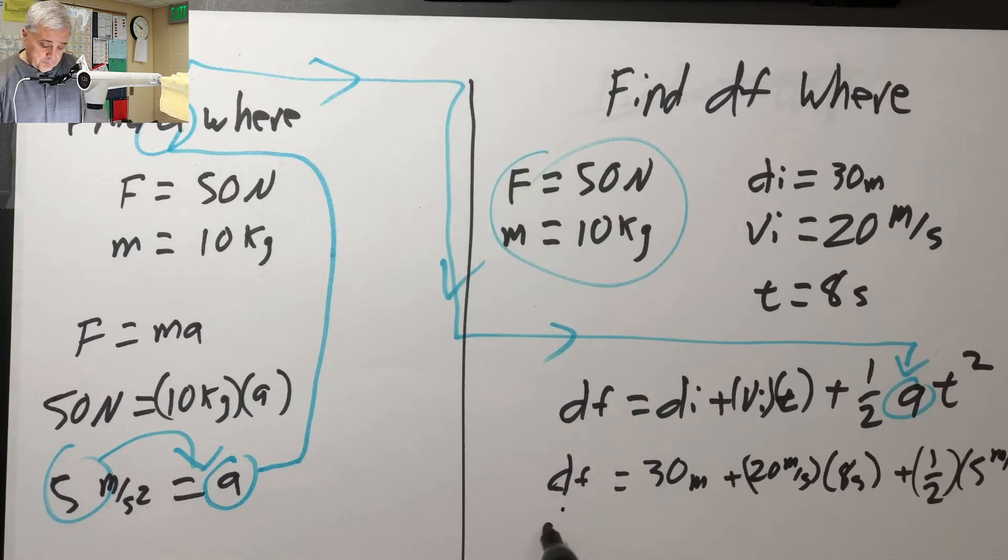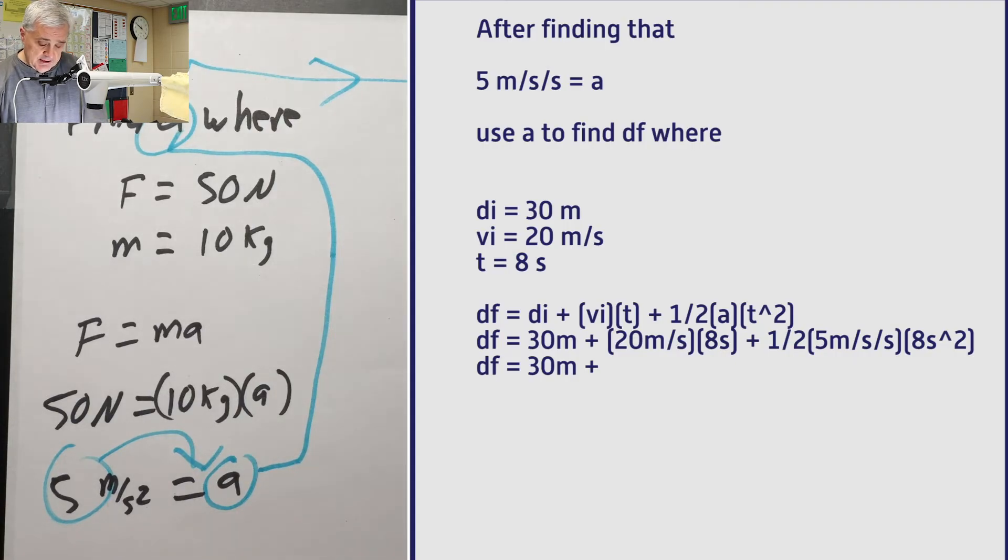d sub f, d sub f equals 30 meters, doesn't change. 20 times 8 is 160. 160 meters plus 1 half times 5 meters per second squared. 8 squared is 64, second squared is second squared. 64 seconds squared.